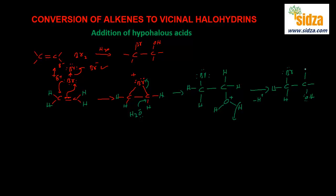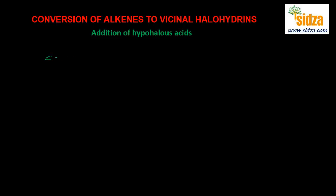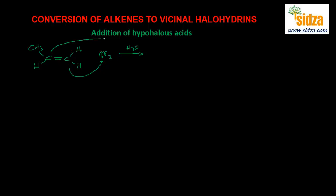But if you have an alkene with different substitutions around the carbon-carbon double bond, how do you determine the final product? Let's draw the mechanism of another reaction. We have a carbon-carbon double bond where one carbon has two hydrogens and the other has one methyl group and one hydrogen. When you add bromine and water, bromine goes to the less substituted carbon and the hydroxyl group is added to the central carbon. The product is CH3C(OH)H-CH2Br.